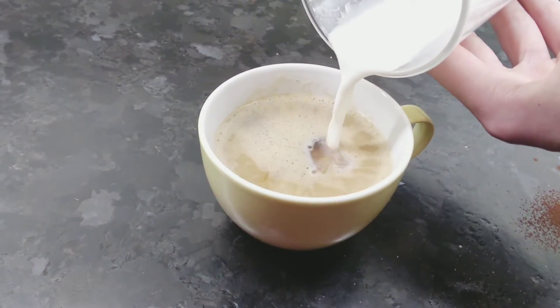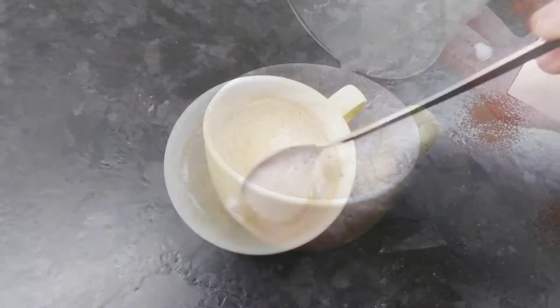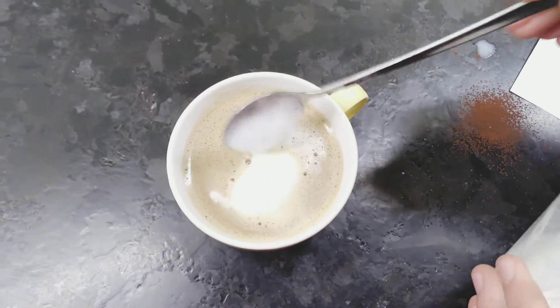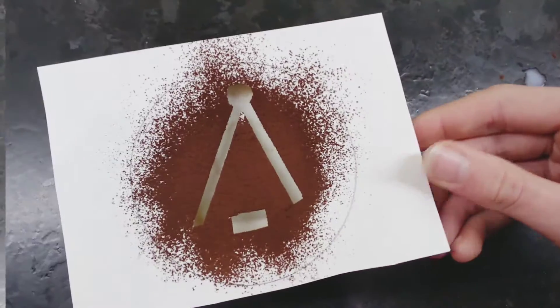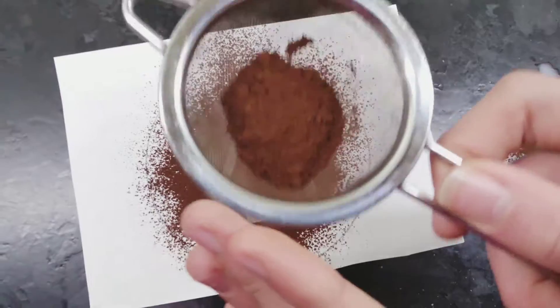Top up the coffee with the liquid milk, then spoon the froth on top. Next put the template on and sprinkle cocoa powder all over it.